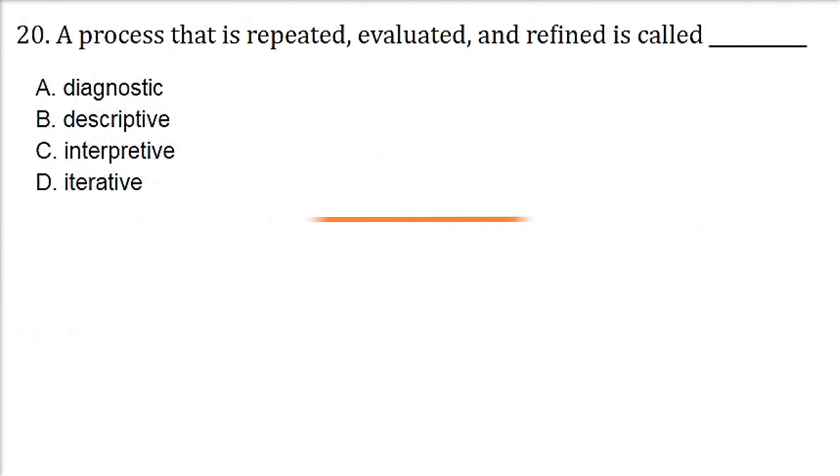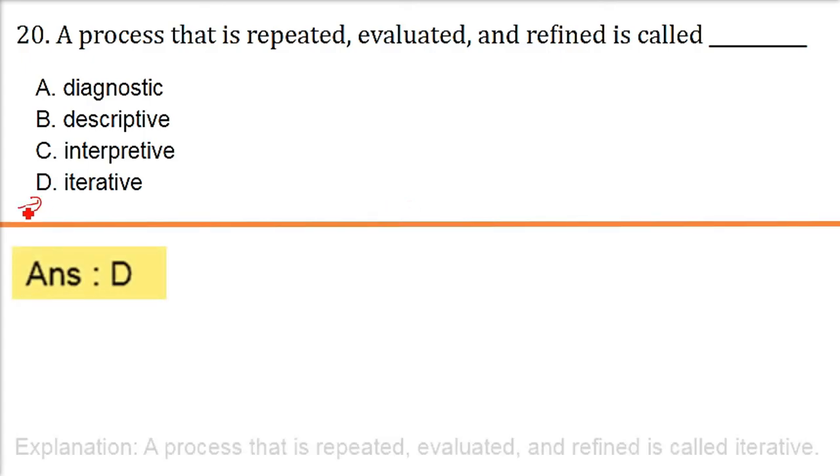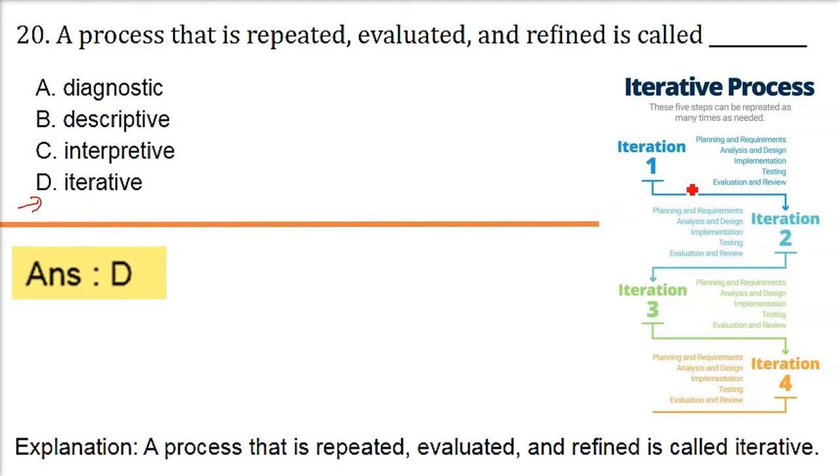The process that is repeated, evaluated, and refined is called iterative. The process that is repeated, evaluated, and refined is called iterative. Because every time it repeats, it evaluates itself. And then the result gets refined. So this is the view, or the picture, of iterative process.